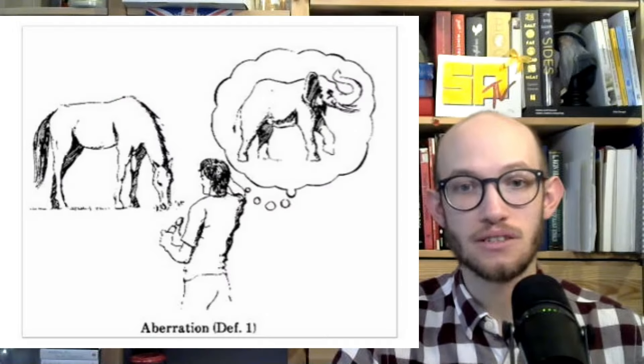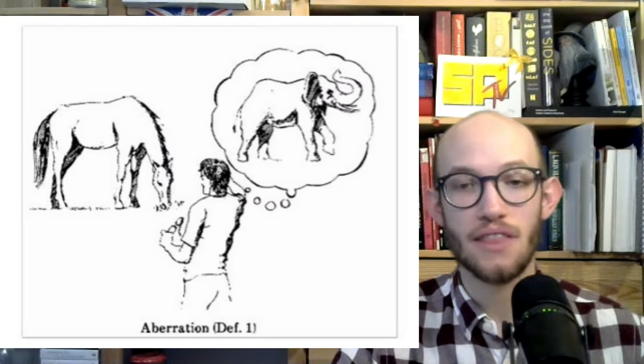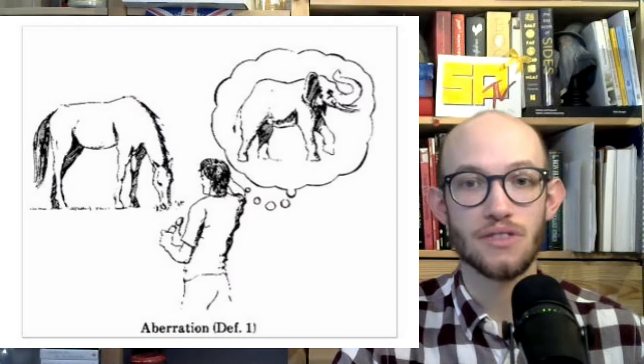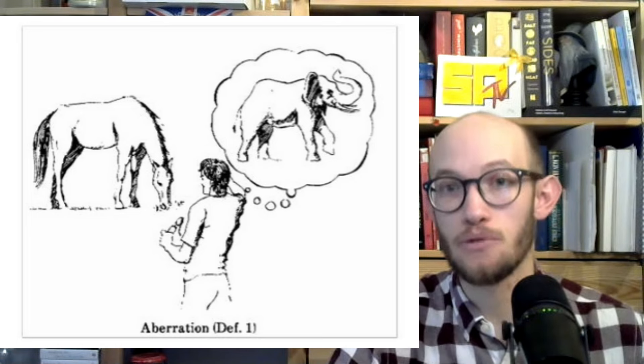Sometimes in this dictionary there are also hand-drawn pictures for the different definitions. Here for aberration there is actually a picture — as you can see, there's a man taking off his glasses, looking at a horse, and thinking 'oh, this is an elephant.' So this is an aberration — he doesn't see what is actually there.